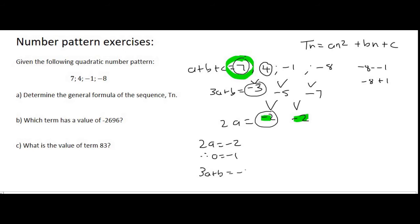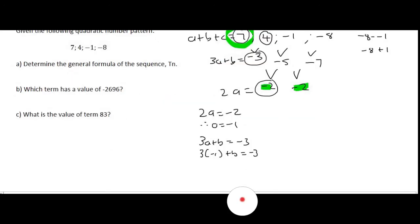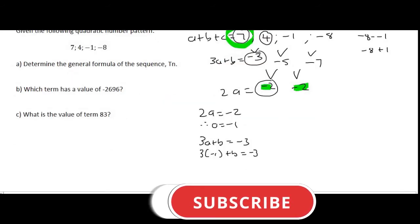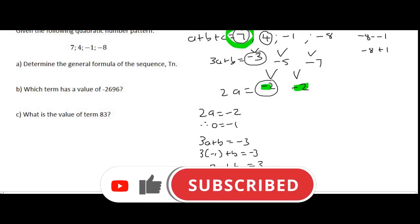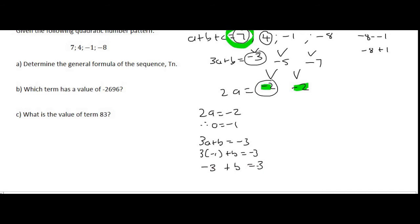3A plus B is equal to minus 3. But we now know that A is equal to minus 1. So we end up with that. And so if we multiply the 3 and the minus 1, that gives us minus 3 plus B equals minus 3. And so if we take the minus 3 over, we end up with B equals 0.